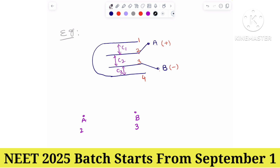Our task is to find the effective capacitance. Between plates 2 and 3, C2 is there. Plate 2 is joined to A and plate 3 is joined to B. That is C2.